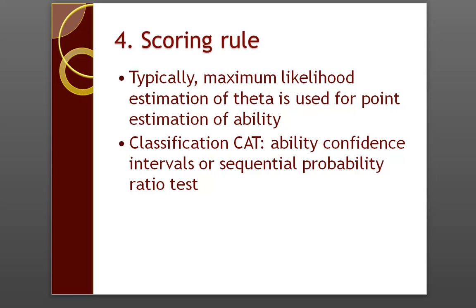The fourth component is a scoring rule. Typically, maximum likelihood estimation of theta is used when the purpose of the CAT is point estimation of ability — that is, we want to find an accurate score for each examinee. If it is a classification CAT, where the purpose of the test is just to pass or fail somebody or some similar classification, the scoring rule is typically based on ability confidence intervals or the sequential probability ratio test.